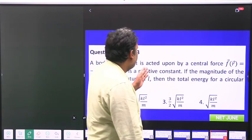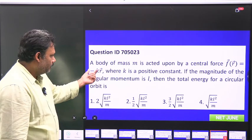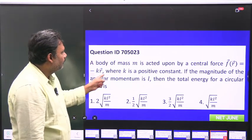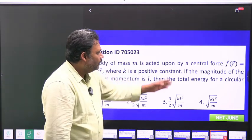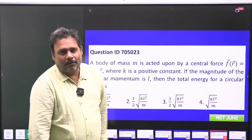A body of mass m is acted upon by a central force F(r) = -kr, where k is positive. If the magnitude of angular momentum is small l, then find the total energy in a circular orbit.